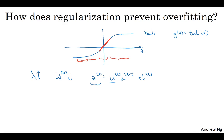And in particular, if z ends up taking relatively small values just in this little range, then g of z will be roughly linear. So it's as if every layer will be roughly linear, as if it's just linear regression. And we saw in course one that if every layer is linear, then your whole network is just a linear network. And so even a very deep network with a deep network with a linear activation function is, at the end of the day, only able to compute a linear function.